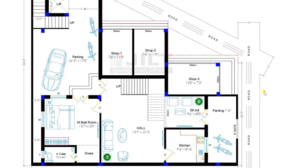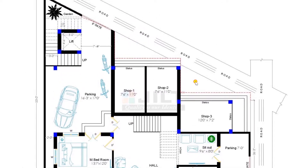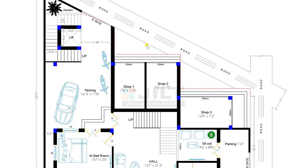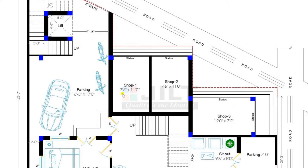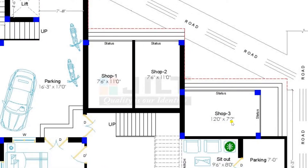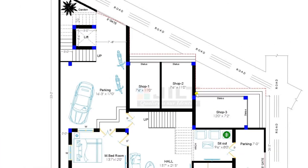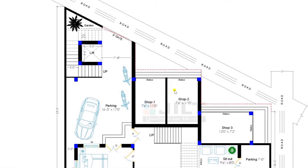Now moving towards the north side direction entrance. On the north side we have designed shop 1, shop 2, and shop 3 — three commercial shops. Shop 1 dimension is 7 feet 6 inches by 11 feet. Shop 2 is of dimension 7 feet 6 inches by 11 feet. And shop 3 is 12 feet by 7 feet 2 inches. These 3 shops are for commercial purpose.